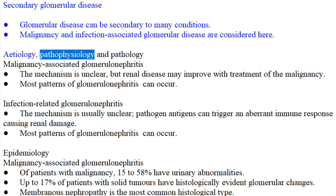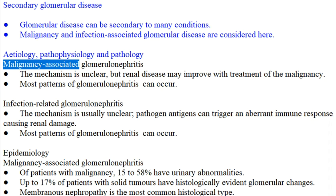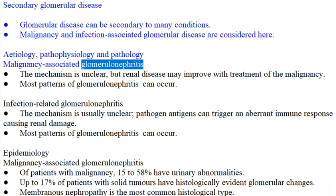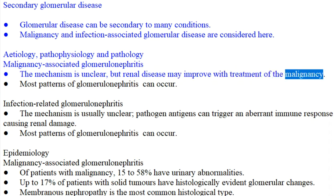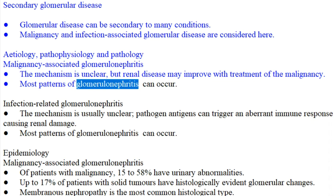Etiology, pathophysiology, and pathology. Malignancy-associated glomerulonephritis: the mechanism is unclear, but renal disease may improve with treatment of the malignancy. Most patterns of glomerulonephritis can occur.